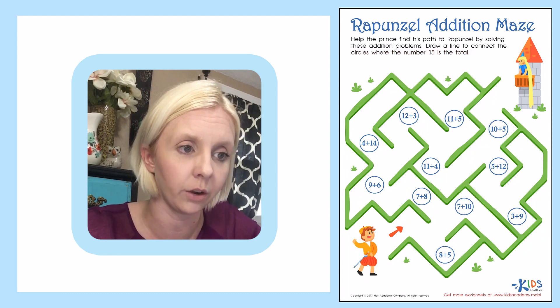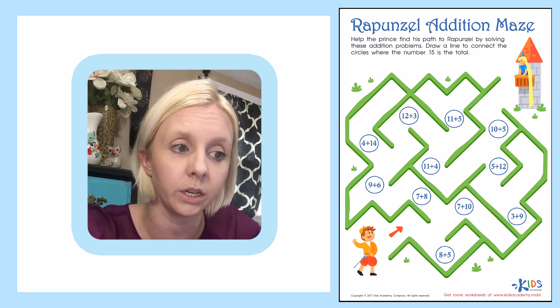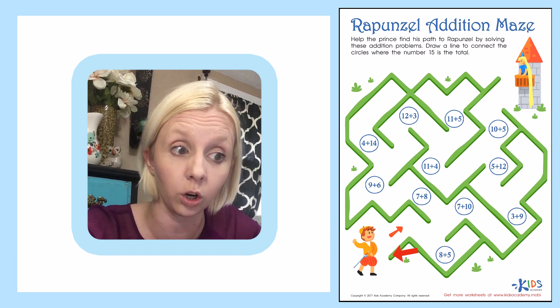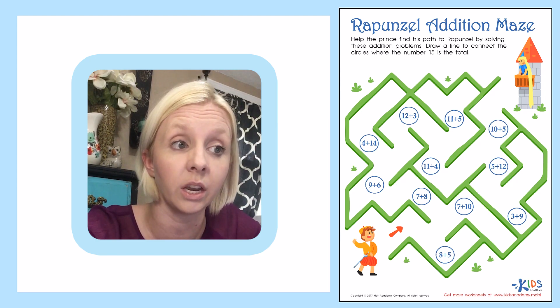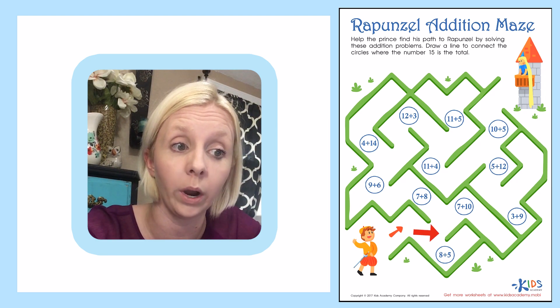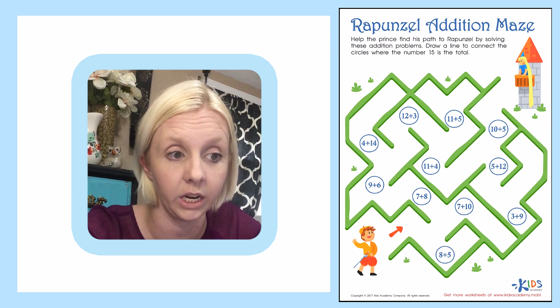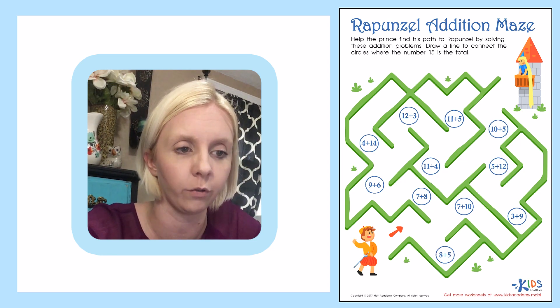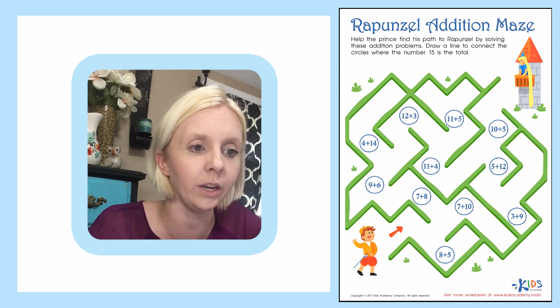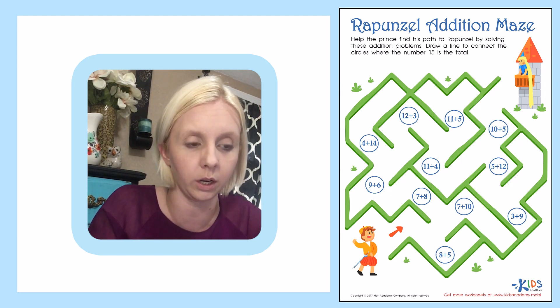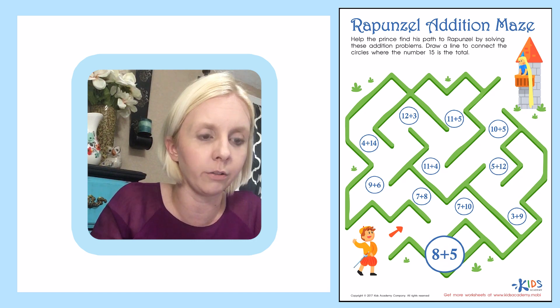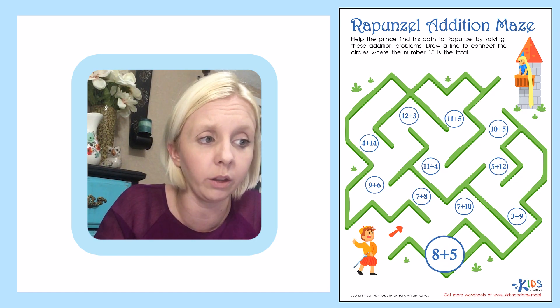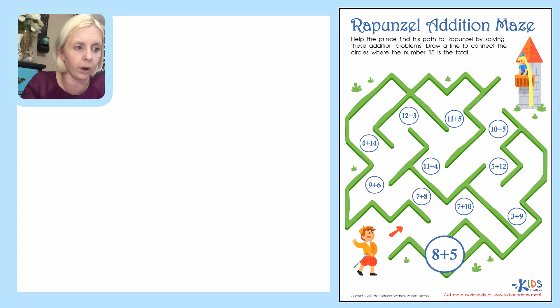So let's look down here and we're trying to find our prince. So he's right down here. So this is where we're going to start at the bottom of the page and the arrow shows us that we're going to go up through the maze. The directions say that we're trying to find an equation that equals 15. So let's start with our first dot that we run into right over here. And the equation is 8 plus 5. So I'm going to try to figure out what this equation is and I'm just going to quickly make some dots and count them up.